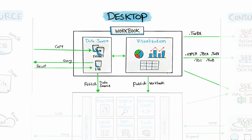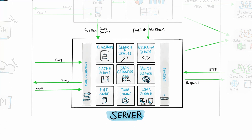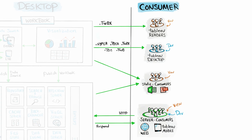The data source and visualizations together form a workbook, which can be sent as a file or shared to the server. The server layer hosts our workbooks and contains many components: data connectors to connect sources to Tableau Server, the gateway to route client requests, the Application Server for login and publishing, the VizQL Server for visualization, and the Data Server for data management. The Data Engine handles extracts, and data is stored in three places: the repository for XML and security objects, the file store for extracts, and the cache server for performance.